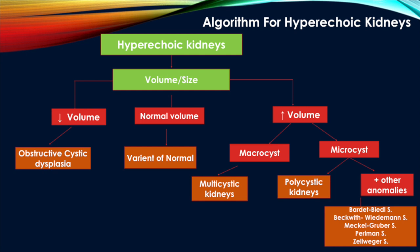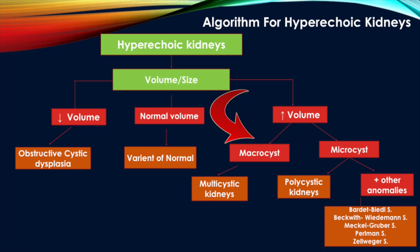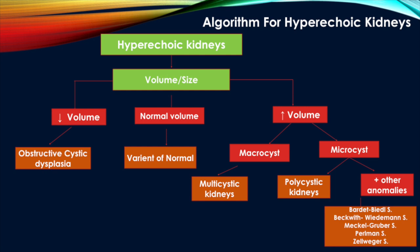How to evaluate a case of hyperechoic kidneys: first assess the volume or size of the kidney. Kidneys can be small as in obstructive renal dysplasia, or increased in volume because of macrocysts or microcysts. Microcysts are commonly seen with multicystic kidneys; microcystic pattern is seen with polycystic kidney and can be associated with other anomalies and syndromes. Hyperechoic kidneys with normal volume is a real troublesome issue as it can be a variant of normal. We must thoroughly scan the fetus, mention the normalcy of the bladder and liquor, ask for any family history of renal disease, and suggest a follow-up.